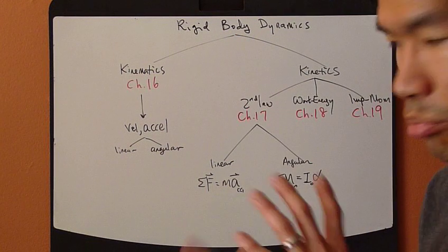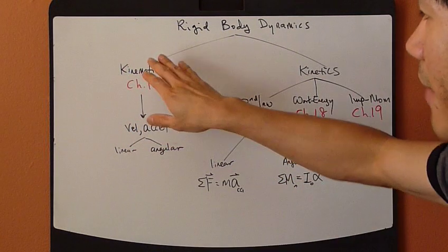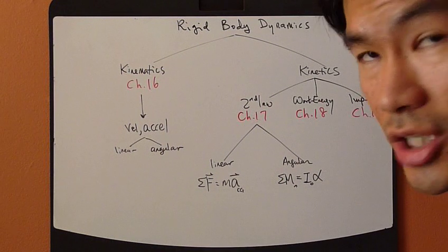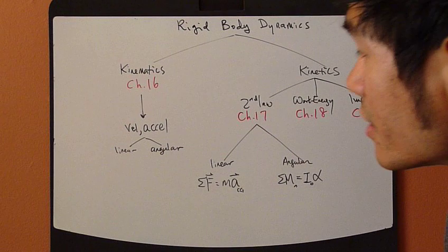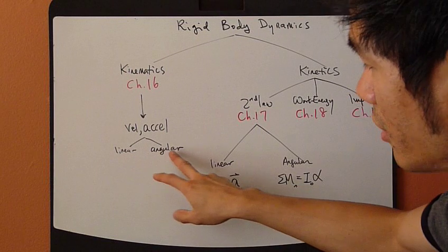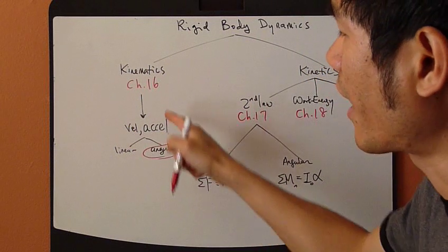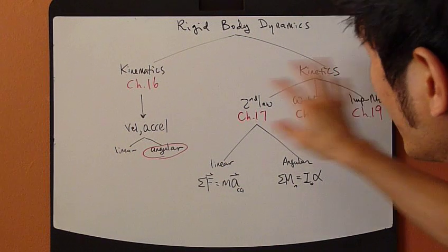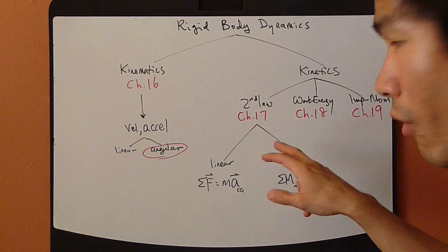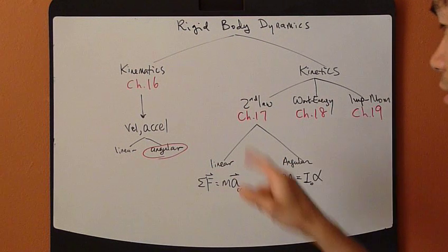Under rigid body, just like particle dynamics, you can look at kinematics first and then kinetics. Kinematics is concerned with the geometry of motion, so we're going to study velocity and acceleration — that's chapter 16. For velocity and acceleration, we're going to look at the linear portion as well as the angular portion, which is something new: angular velocity and angular acceleration. Then we'll move on to the next three chapters dealing with kinetics, using the three methods: Newton's second law, work-energy, and impulse-momentum.